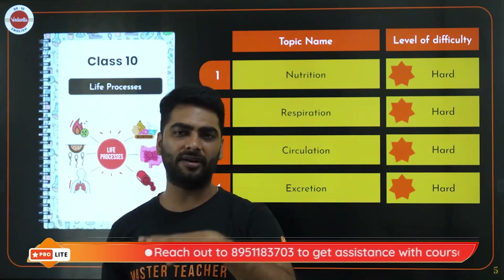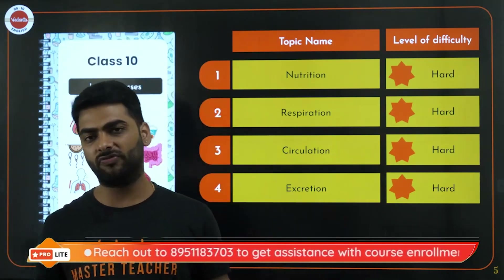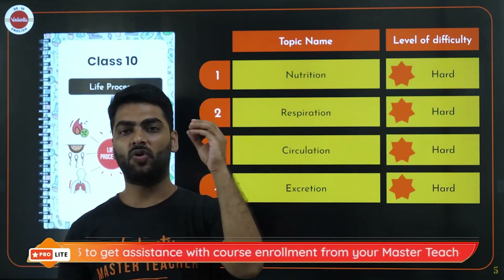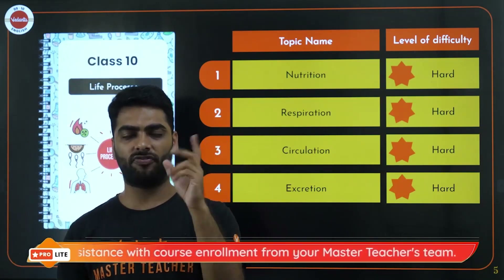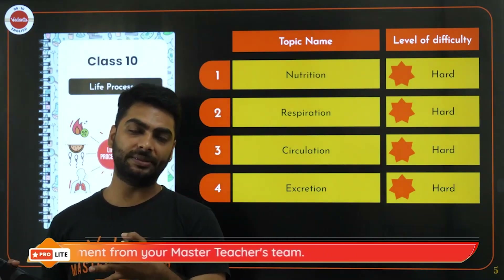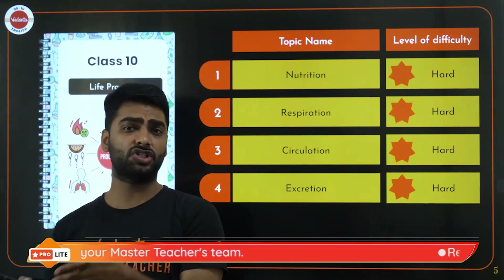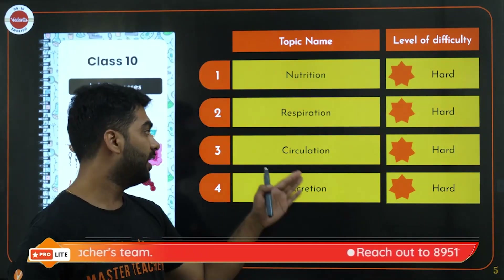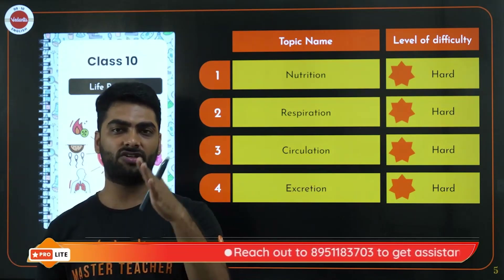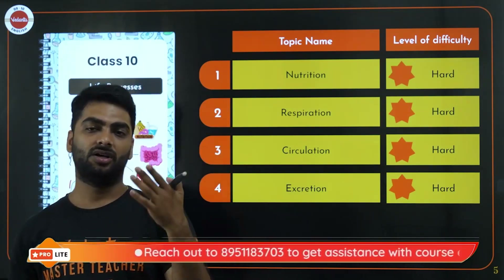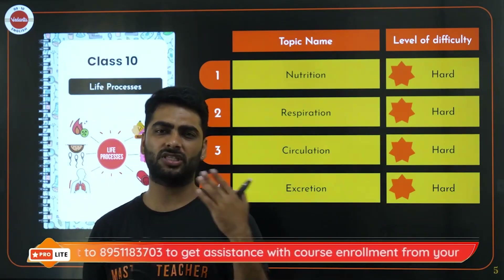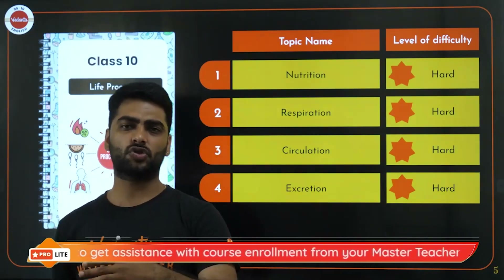Salivary amylase helps break down carbohydrates to maltose. Respiration covers alveoli, the exchange of oxygen and carbon dioxide, and the breakdown of glucose to release energy — with oxygen, without oxygen, and with limited oxygen. Circulation covers the heart: left and right atrium and ventricle, aorta, systemic circulation, pulmonary artery, pulmonary veins, double circulation, sphygmomanometer for blood pressure, and stethoscope.